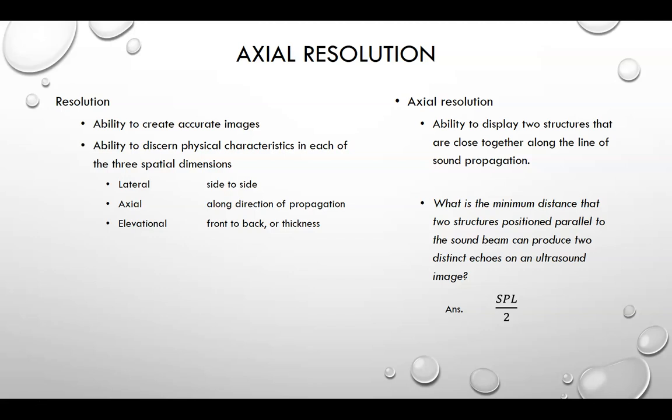Axial resolution is the ability to discern structures along the path of the pulse. Two structures closely together at slightly different depths — if we can discern them apart, we have the axial resolution to do so. Elevational resolution is perpendicular to both axial and lateral, along the thickness of your probe. If you're always incorporating some liver tissue with a cyst and can never separate them in the elevational plane, you will not see the cyst clearly.